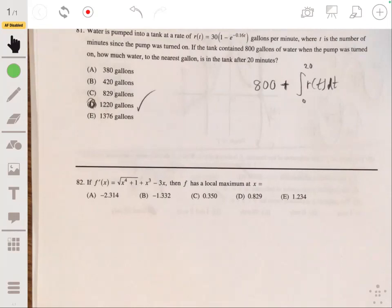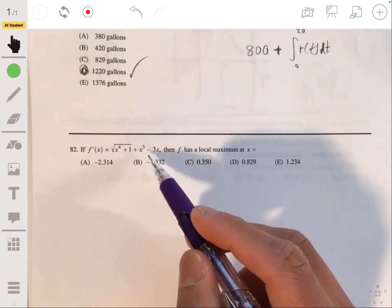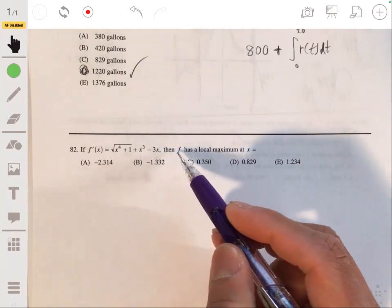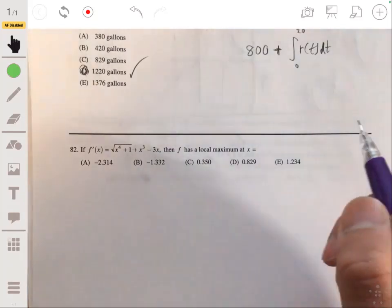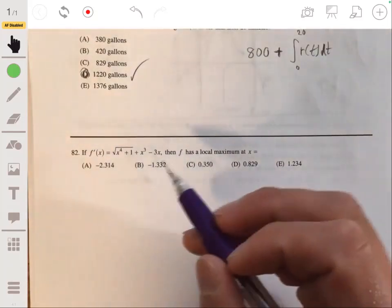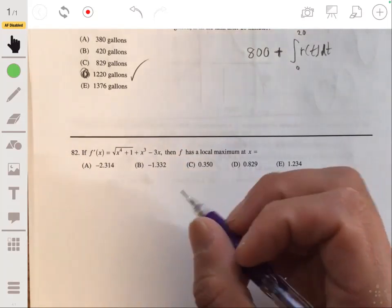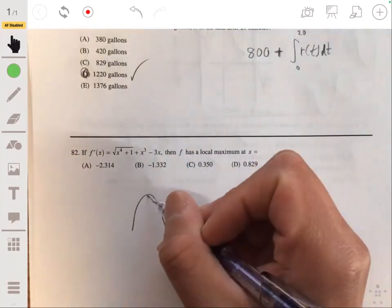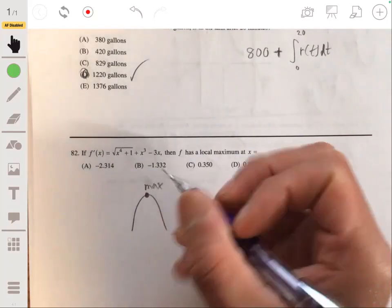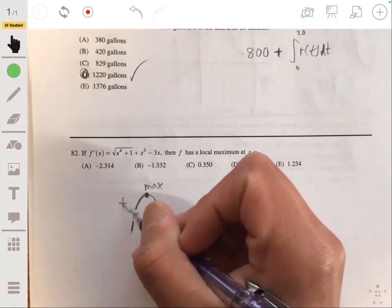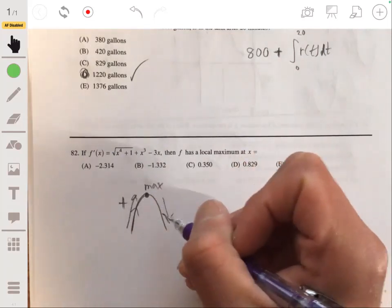All right, 82. If F prime of X is equal to the square root of X to the fourth plus 1, plus X cubed minus 3X, then F has a local maximum at X equals. So what we want to do is look at the graph of F prime. And remember, a maximum occurs, this could be like a local max, when the derivative goes from being positive to being negative.